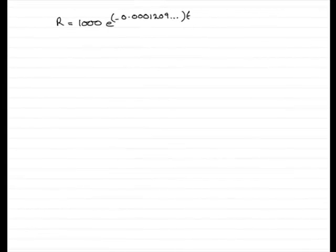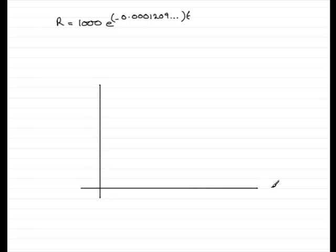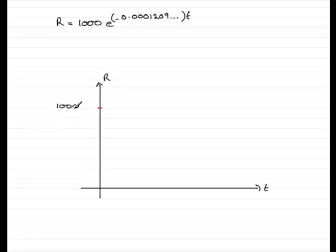Now for the last part of the question, we've got to sketch the graph of r against t. So we'll just draw our axes like so — t here and r here. Now we know that when t was 0, r was equal to 1,000. So we could mark in that point there as 1,000.